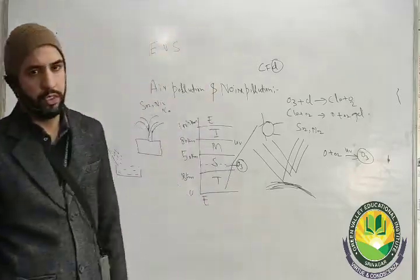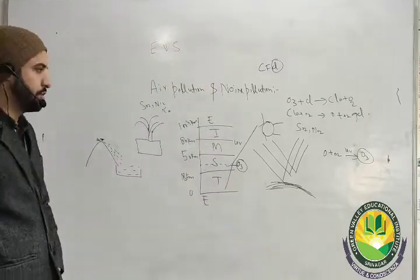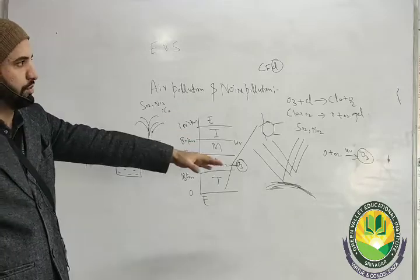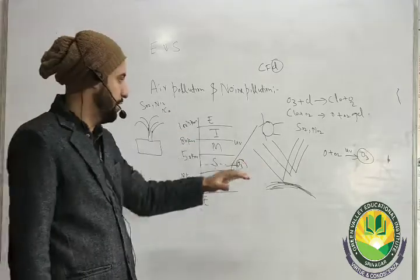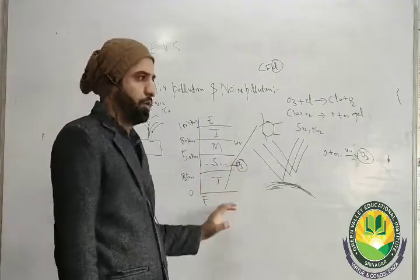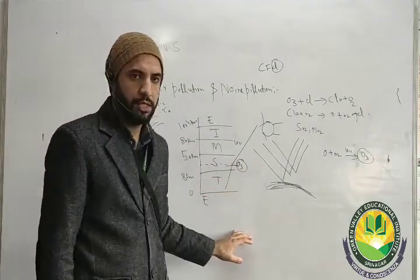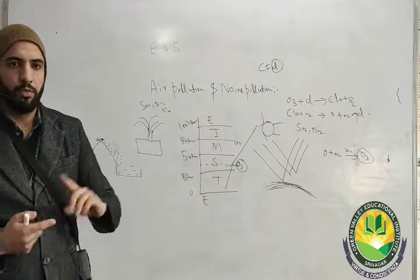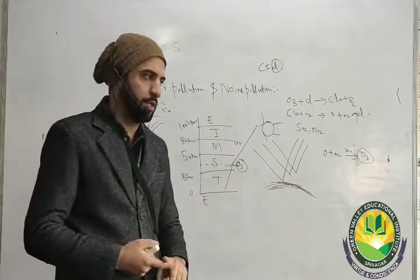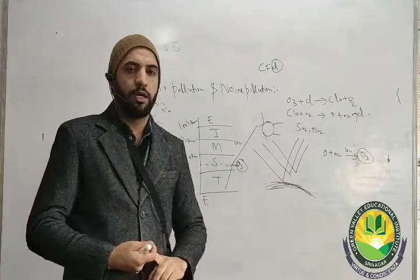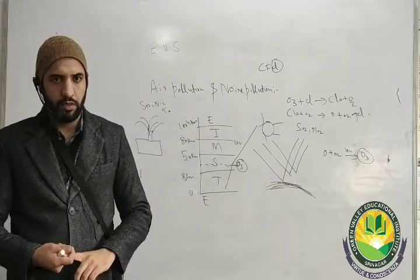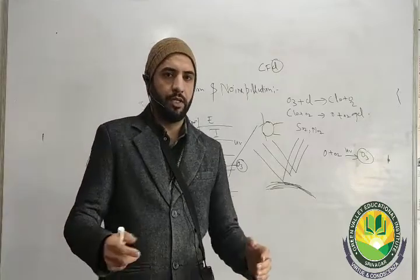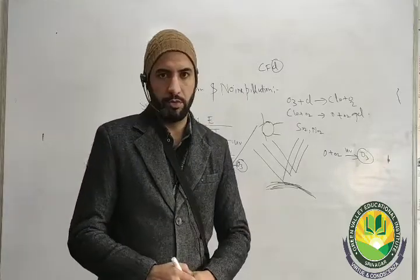So this is ozone depletion. If the ozone is depleted, UV radiation will reach the Earth, causing skin cancer, immune disorders, and genetic disorders.